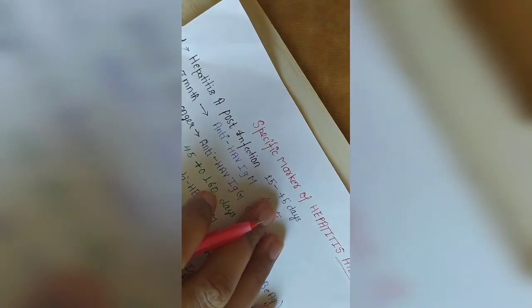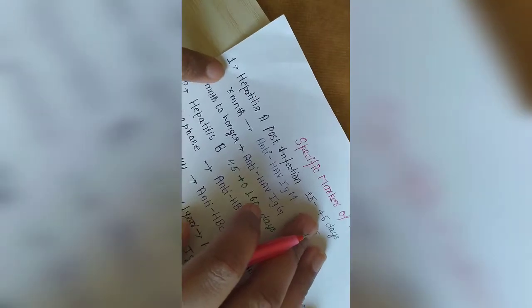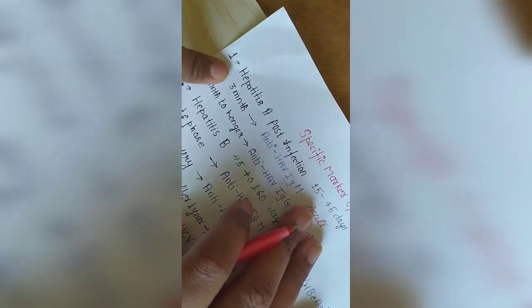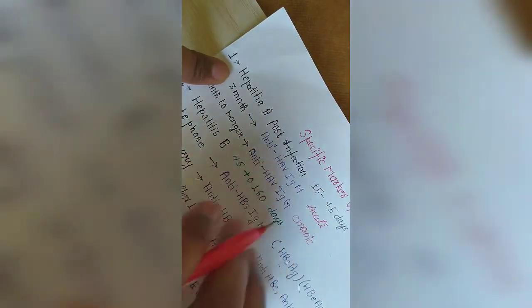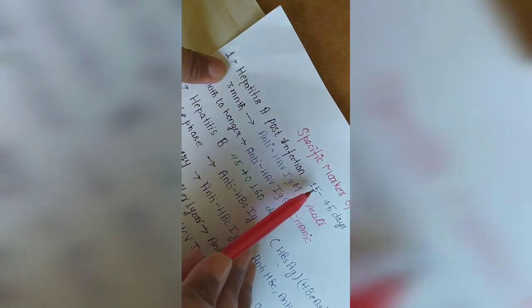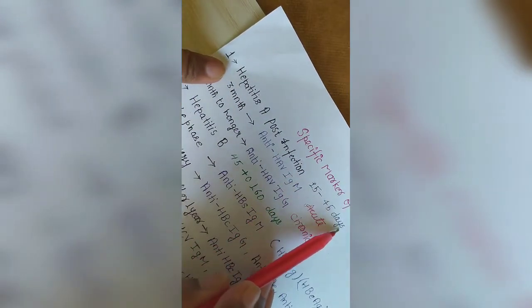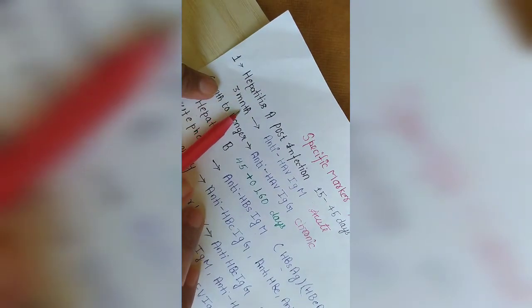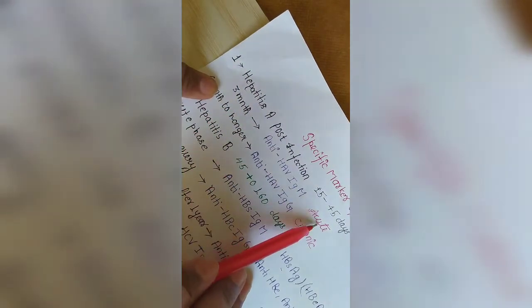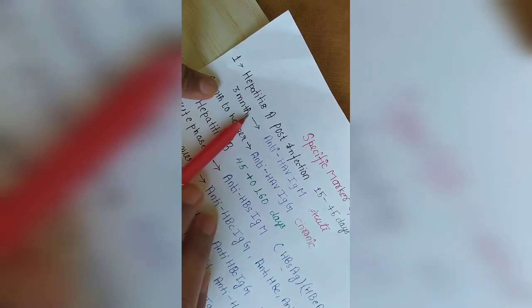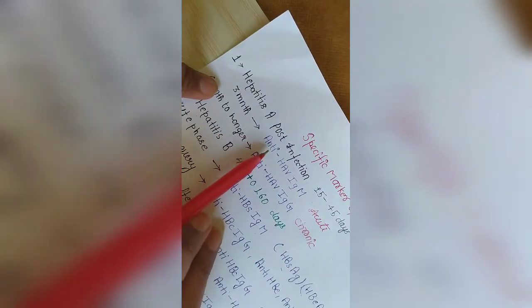Welcome back with another video. Today I am going to discuss specific markers of hepatitis A, B, C, D, and E. First of all, I'll explain hepatitis A. The incubation period of hepatitis A is 15 to 45 days, and in acute phase or acute infection it's three months. The antibody will detect anti-HAV IgM.